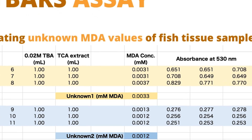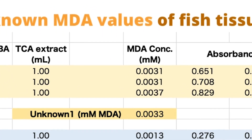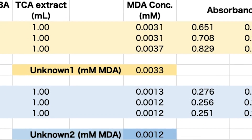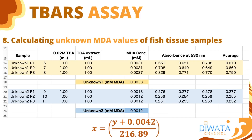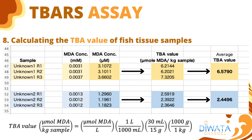The known MDA concentrations of our fish samples are 0.0033 millimolars for sample number 1 and 0.0012 millimolars for sample number 2. However, TBARS, or TBA value, is usually expressed as micromole MDA per kilogram sample. TBA expressed as micromole MDA per kilogram sample can be calculated using this equation, where micromole MDA per liter is equivalent to millimolar MDA. Using dimensional analysis to convert liters to milliliters, multiplied by the ratio of 3 ml extracting solution to the weight of the sample used, and converting grams to kilograms. Thus, TBARS or TBA values expressed in micromole MDA per kilogram sample are 6.58 for sample number 1 and 2.45 for sample number 2.